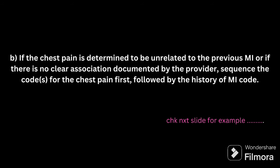Second point: if the chest pain is determined to be unrelated to the previous MI. The patient is having history of MI as well as chest pain, but this chest pain is not related to the previous MI — there is no clear association documented by the provider. In this case, chest pain should be the first code and history of MI should be the second code. If the chest pain and history of MI are not related to each other, chest pain should be the primary code.